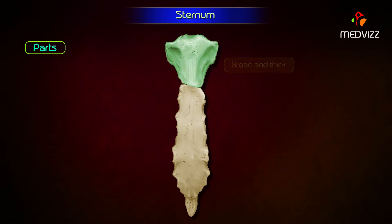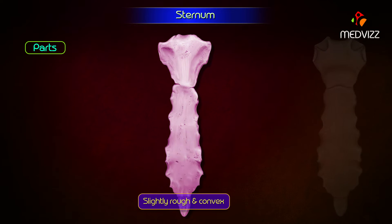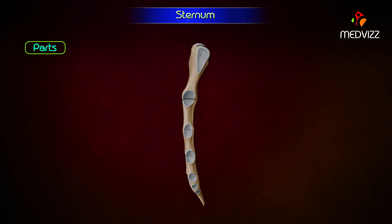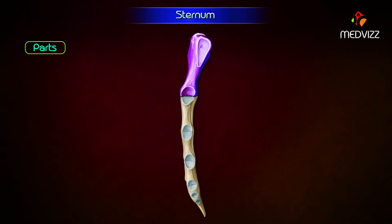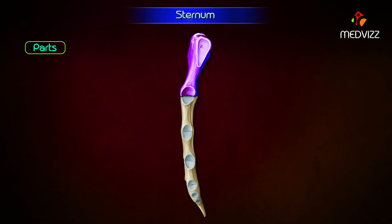The upper part of the sternum is broad and thick whereas its lower part is thin and pointed. Its anterior surface is slightly rough and convex, while its posterior surface is smooth and slightly concave. The manubrium and the body of the sternum lie at an angle of 160 degrees to each other, which increases slightly during inspiration and decreases during expiration.